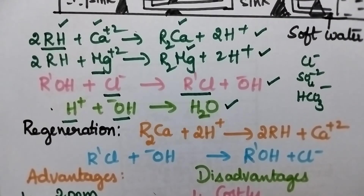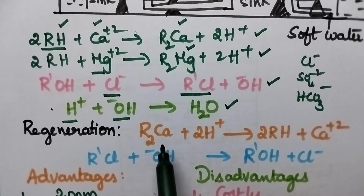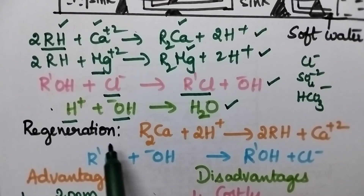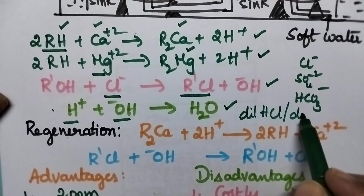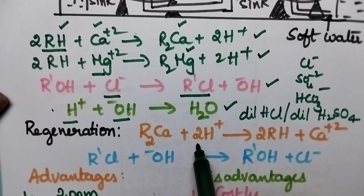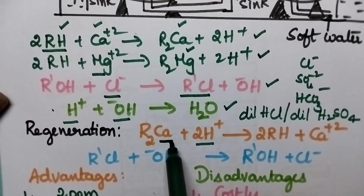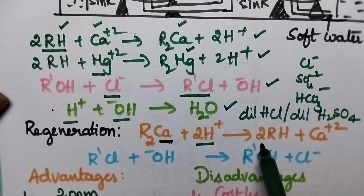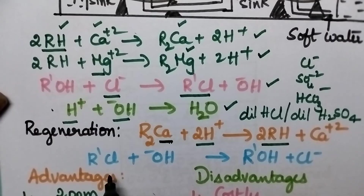After some time, when all the H+ ions are replaced by calcium or magnesium ions, the cation exchange bed is called exhausted. The cation exchange bed can be regenerated by washing with dilute HCl or dilute sulfuric acid. This supplies H+ ions, allowing the calcium and magnesium ions to be replaced by H+ ions, and again forming the cation exchange resin.